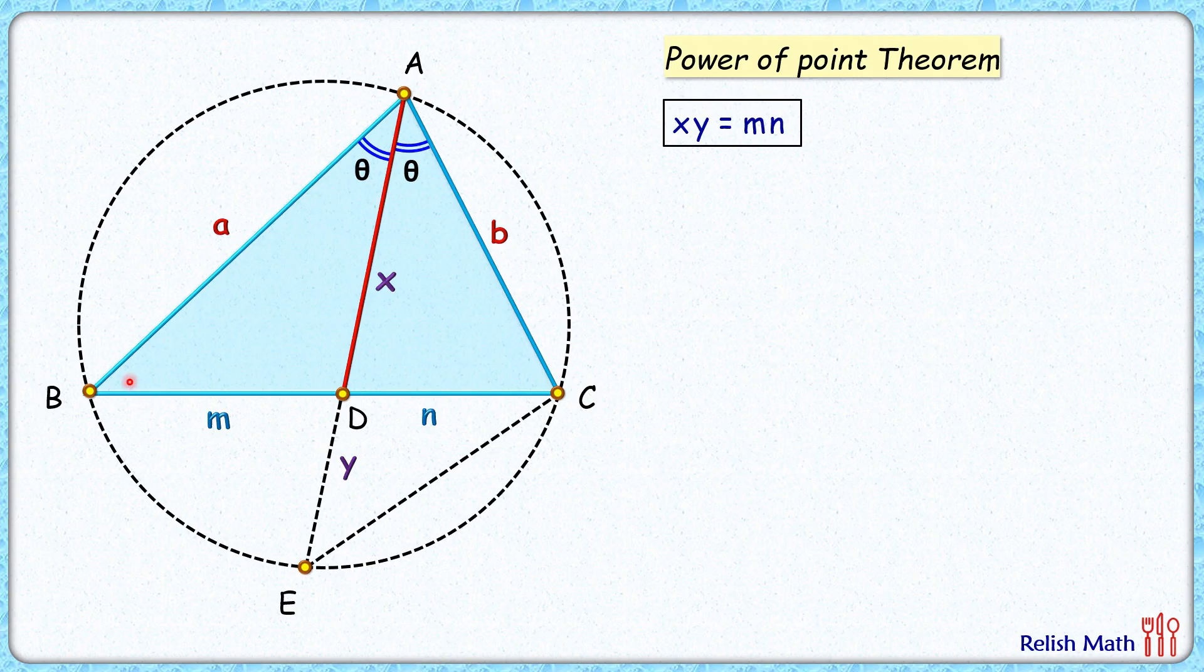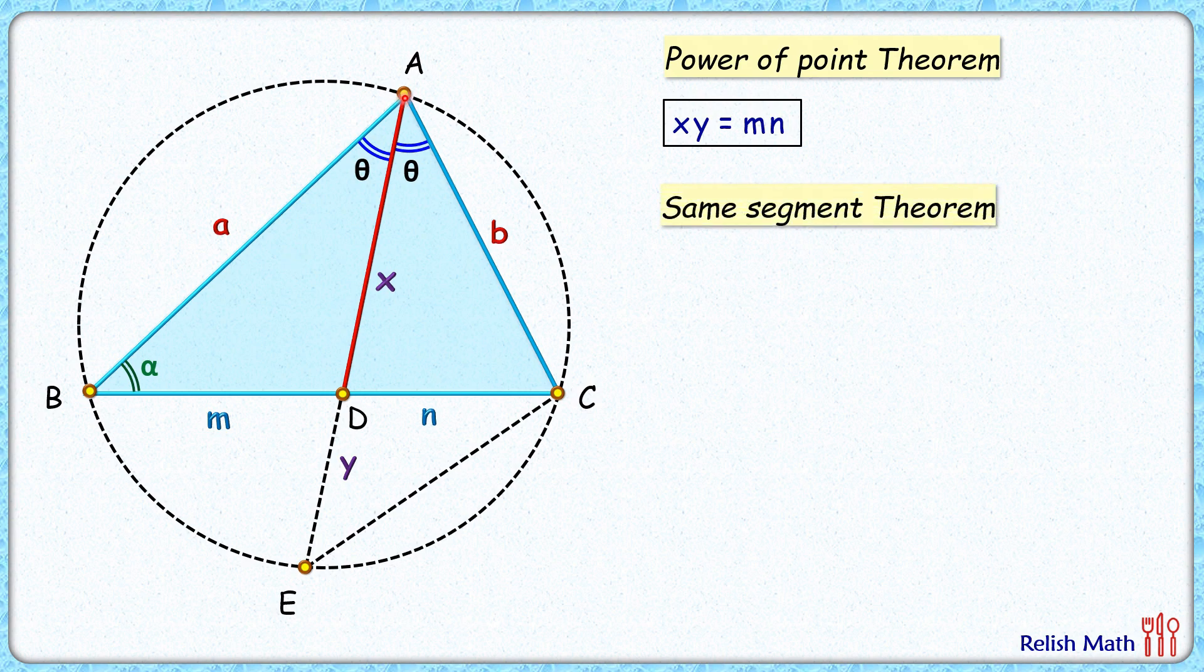Now this angle B, let's assume it is alpha degrees. Using same segment theorem, if chord AC sustains angle alpha at point B, then in the remaining part of the segment it will sustain the same angle alpha degrees.